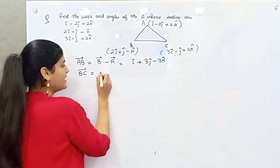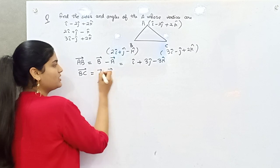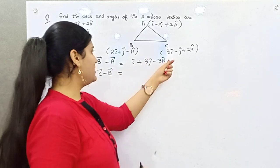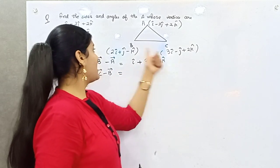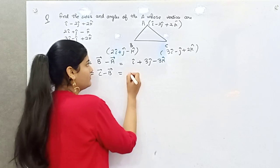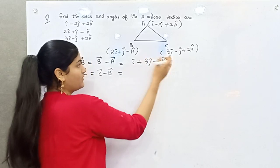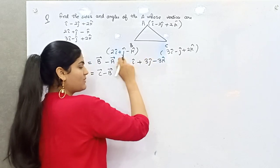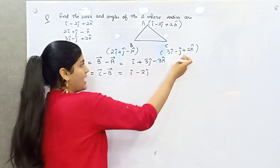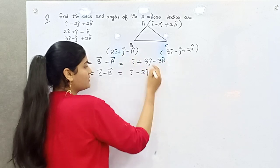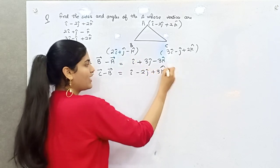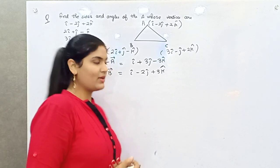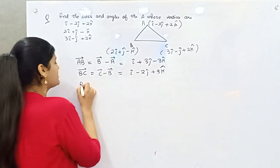Coming to the BC side, BC will be C minus B — final minus initial. So C minus B: 3i minus 2i = i, minus j minus j = minus 2j, and 2k minus (minus k) gives... the k components: 2k minus negative k results in 0 after simplification, giving BC = i − 2j + 3k... wait, the k result is noted as 2k and then 0.